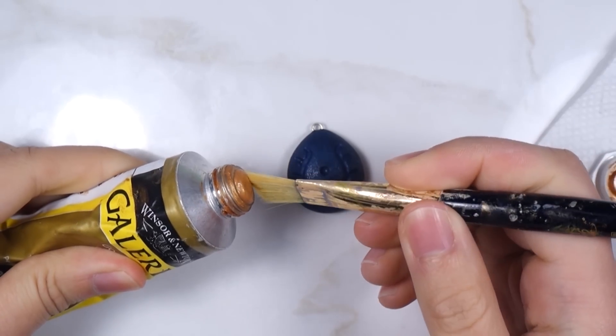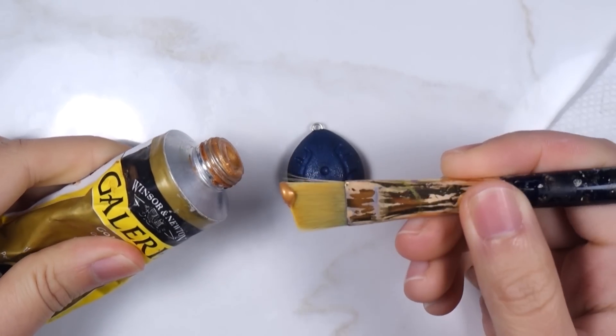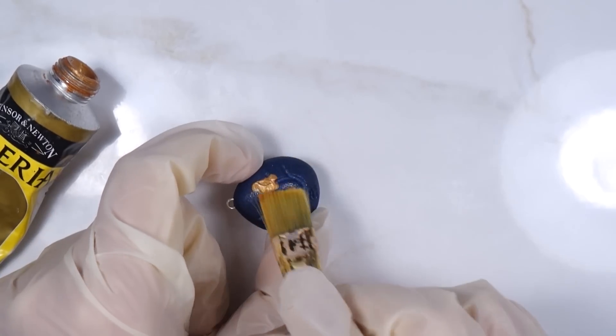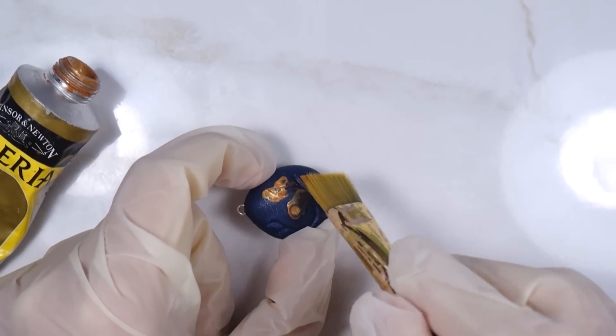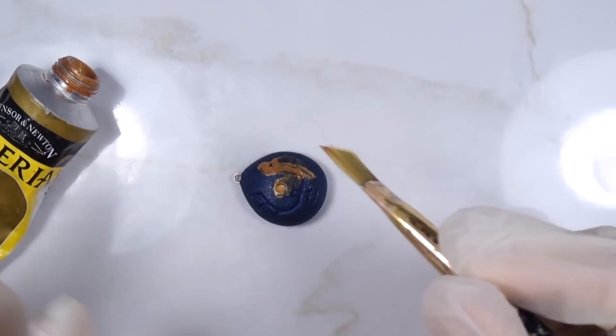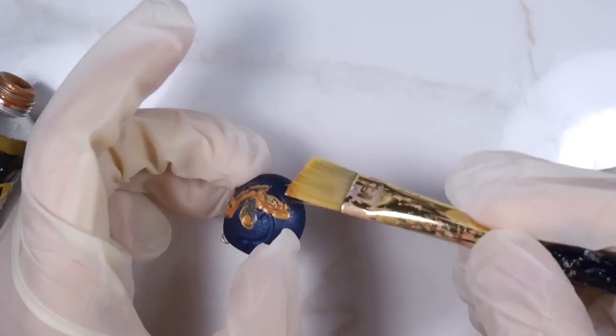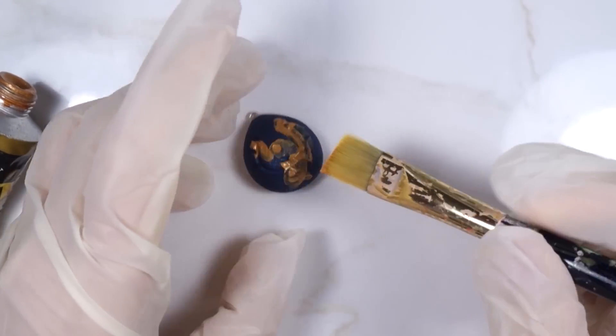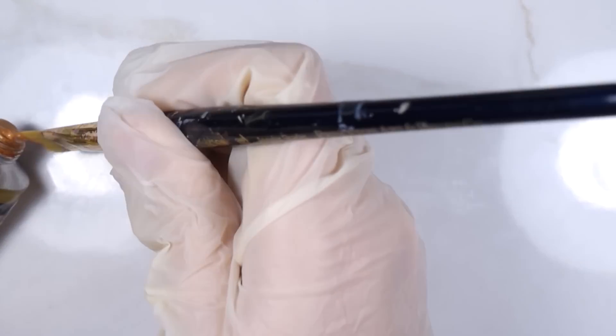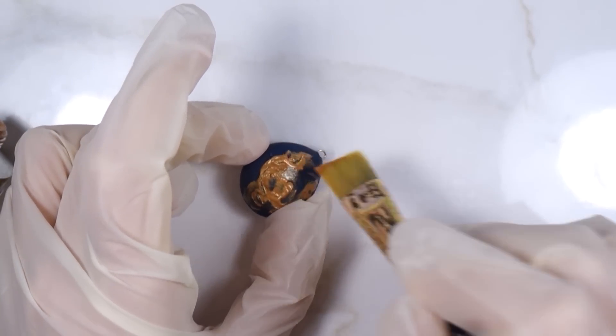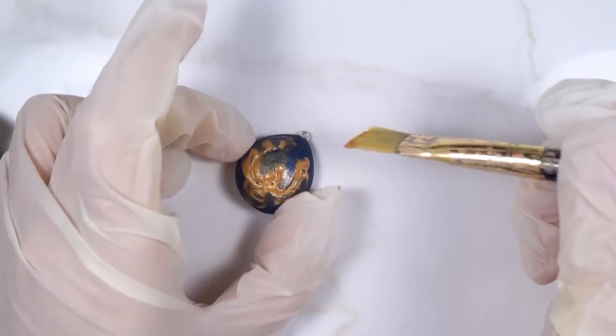After the stone has cooled down, time to apply the gold paint. Make sure to wear gloves if you don't want to get your hands covered in paint. Squeeze some paint onto the brush and just brush it onto the indentation on the Nebula stone. Don't worry about getting the paint on other surfaces, we will wipe it off later.